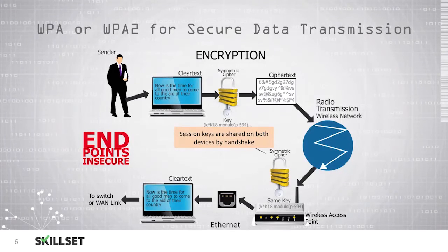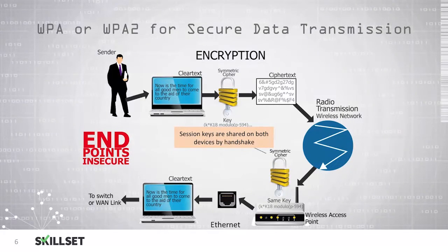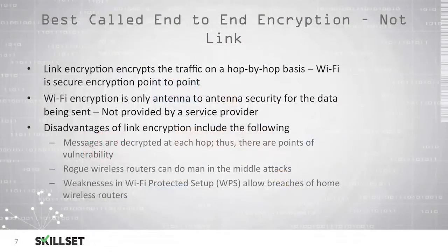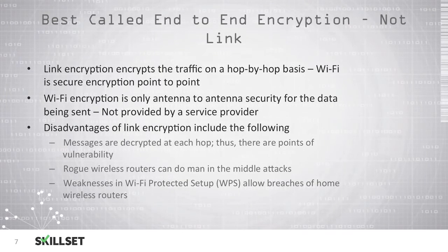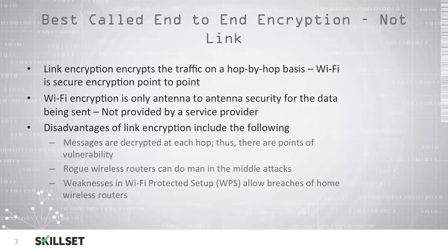There is a note in red mentioning that the endpoints are insecure. This is letting us know that the security in this picture occurs between the sender's laptop and the wireless access point. There is no security before the traffic enters the wireless network, and once the traffic leaves the wireless access point and enters the wired or Ethernet network, there's no longer security in place — it's just clear text being transmitted. We generally refer to this type of encryption as end-to-end encryption and not link encryption. Link encryption encrypts traffic on a hop-by-hop basis, whereas Wi-Fi encrypts the traffic end-to-end from one device to the next. Link encryption is typically provided by a service provider, such as an internet service provider, and Wi-Fi encryption is only from antenna to antenna — from the laptop's wireless card to the wireless access point and back.